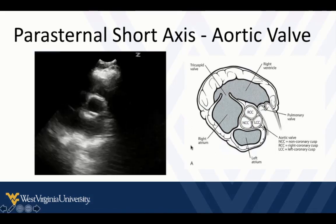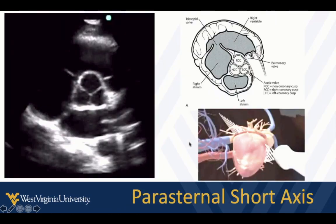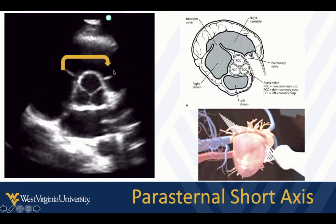Here's a labeled diagram of what we're seeing — a fantastic Mercedes-Benz sign, tricuspid, pulmonic, left atrium, and descending thoracic aorta. Ultrasound is a lot about knowing normal, having normal images and findings locked into your brain so that when something abnormal is present it stands out and you recognize it quickly. Remember that blood flow goes over top of the aortic valve in the parasternal short axis, which helps you remember tricuspid to pulmonic and the right ventricle position.